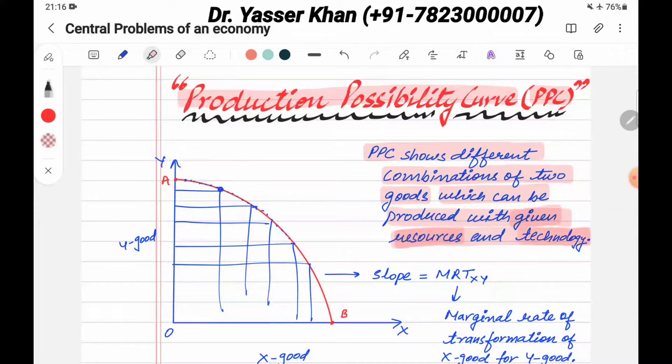If you have given resources and technology, then various combinations that you can create of X good and Y good, when you join them, you will have the production possibility curve. I hope you will understand this thing.